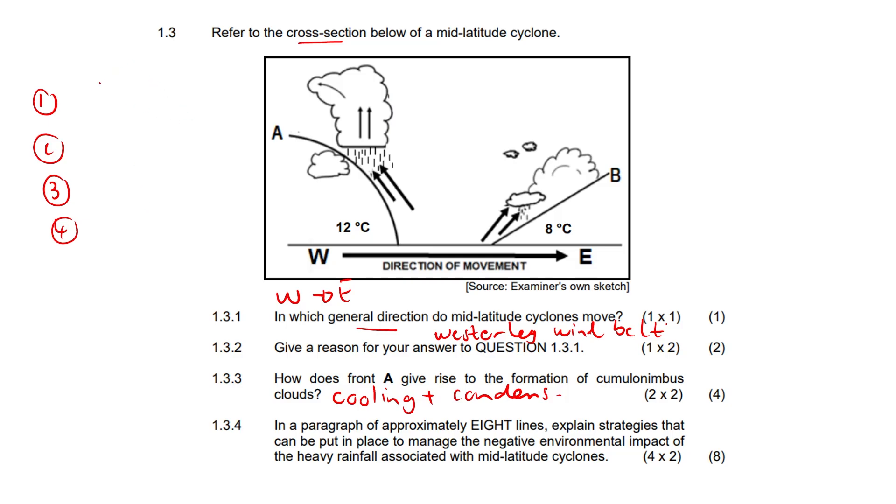The maintenance of natural vegetation is very important, encouraging afforestation, not deforestation. We don't ever want to encourage that. Afforestation, buffering of the area is a nice one to add as well, creating effective drainage systems. I like that one, very generic kind of answer.